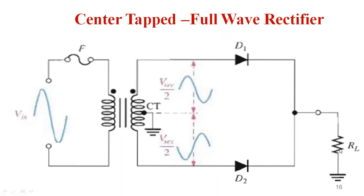Whenever we apply an AC signal at the input of the transformer, the secondary winding induces this signal. During the first positive half cycle of the AC input, the upper terminal is at positive potential and the lower terminal is at negative potential. Because of this, diode D1 is forward biased and turned on, while the negative potential across D2 causes it to be reverse biased and turned off.